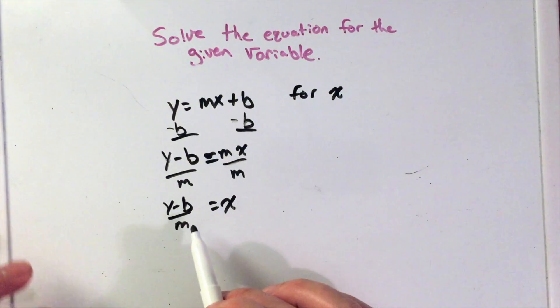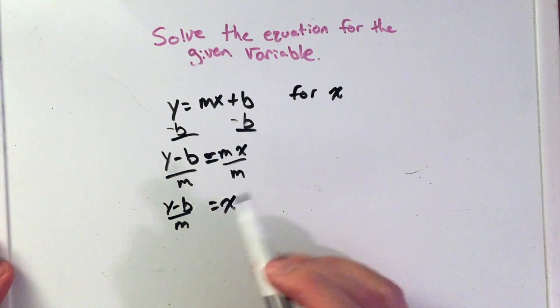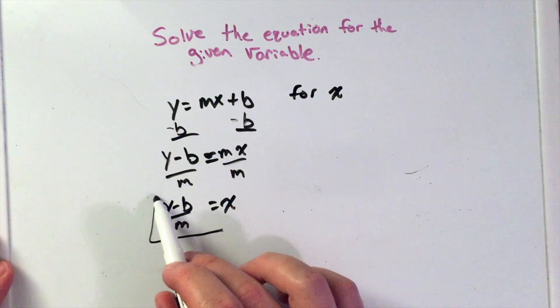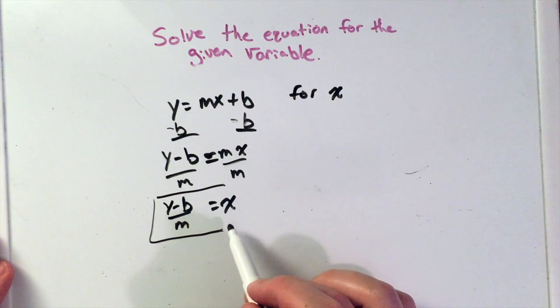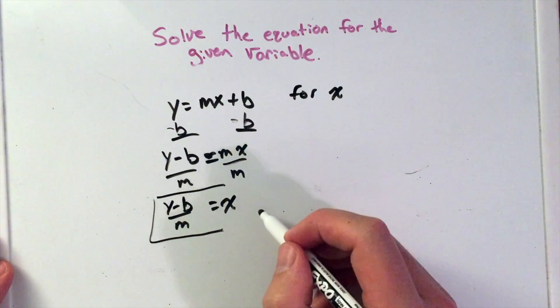Now you could distribute the m to both parts here, but I like to keep it as simple like that, and we're left with just y minus b over m equals x, but where m does not equal zero.